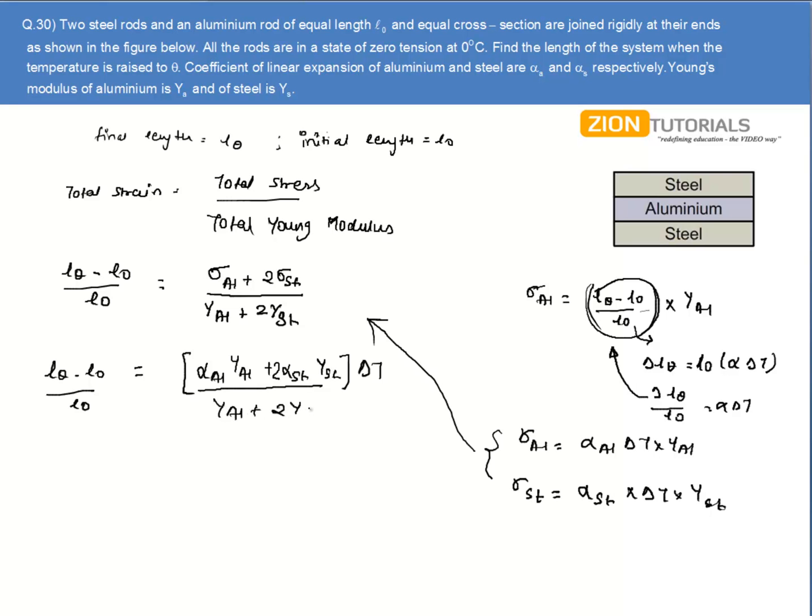So in solving this, I get the value of L_theta as L0 times [1 + (alpha_aluminum × Y_aluminum + 2 × alpha_steel × Y_steel) / (Y_aluminum + 2Y_steel) × delta T]. This is my final length of system, that is the answer.